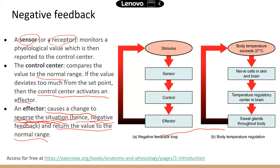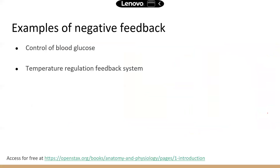Here's an example: body temperature. If it's higher than 37 degrees Celsius, then nerve cells can sense that and tell the control center that the temperature is not normal. There is a temperature regulatory center in the brain, and this regulatory center generates a command sent to an effector that could reverse that change. For example, the control center could tell the sweat glands to secrete, which can bring down the body temperature. Common examples of negative feedback include blood glucose — controlled by the hormones insulin and glucagon — and temperature regulation.